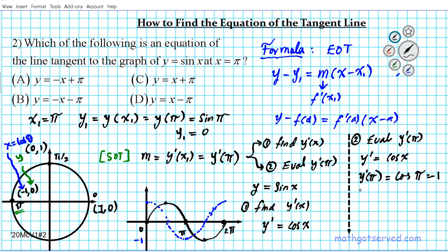What did we just find? We just found what M is, so we have everything we need. Let's rewrite them all: X1 is pi, Y1 is zero, and M is negative one.